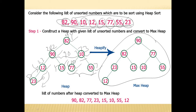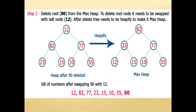Now we need to sort these elements. According to heap sort, we find the root node which is 90 and remove it. The last element is 12, so we replace the root with 12. To delete the root node 90, it is swapped with the last node 12. After removing 90, we check whether it is still a heap tree — it is not, because the root element is now 12 and its children are larger.